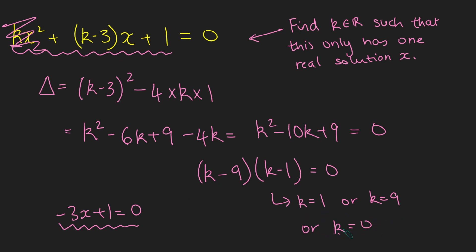If k is any one of these three values, this original equation here will have only one real solution x. So to ensure you don't get caught out by this, do ensure that the thing you're taking the discriminant of is genuinely a quadratic.